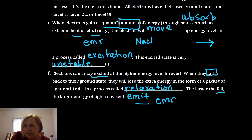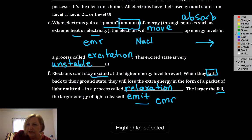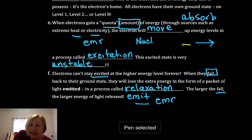The larger the fall, our movement back towards the nucleus. So this time in relaxation, our electrons are moving back towards, so excitation moves away.